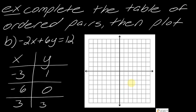I've got my graph back, so we can start plotting points. Starting with (−3, 1): I count back −1, −2, −3 on the x-axis, then up 1. There's my first point. Then (−6, 0): I count −1, −2, −3, −4, −5, −6 and don't go up for y. Then (3, 3): I count 1, 2, 3 on x, then up 1, 2, 3. All three points line up, so I can connect them to form a line.